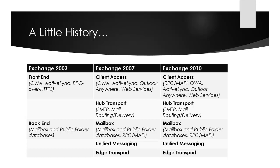Exchange 2010 was very similar to 2007 — the same server roles existed. The main change was that the RPC or MAPI connection endpoint was moved to the Client Access Server role, which introduced the concept of the RPC Client Access Service and the CAS array, the client access high availability model for Exchange 2010. Most other things stayed the same at the high level.